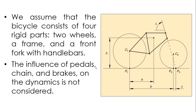We will assume that this bicycle consists of four rigid parts — only four rigid parts: two wheels. We have the back wheel with center C1 and the front wheel with center C2. We also have the frame, and the front fork with handlebars. The influence of pedals, chain, brakes — all these things on the dynamics of the bicycle will not be considered here.